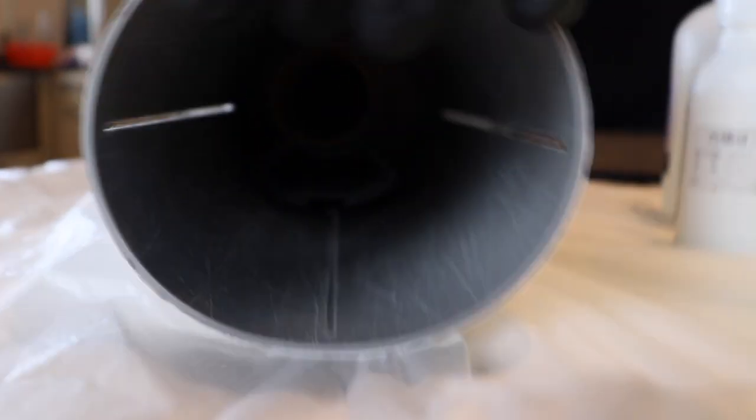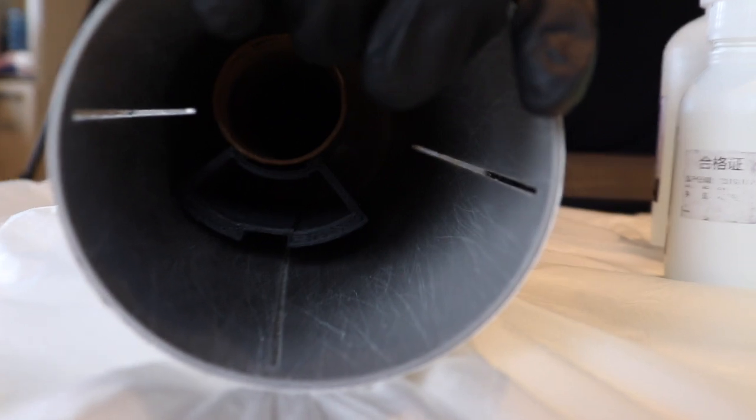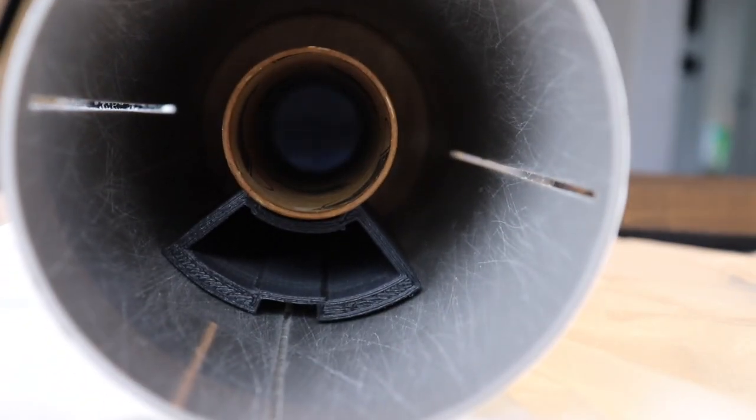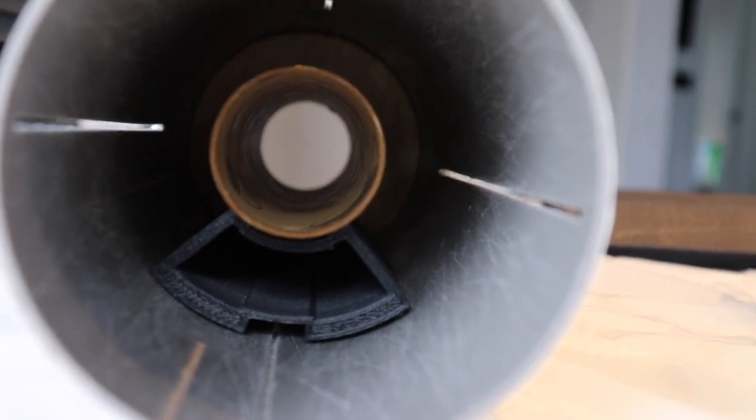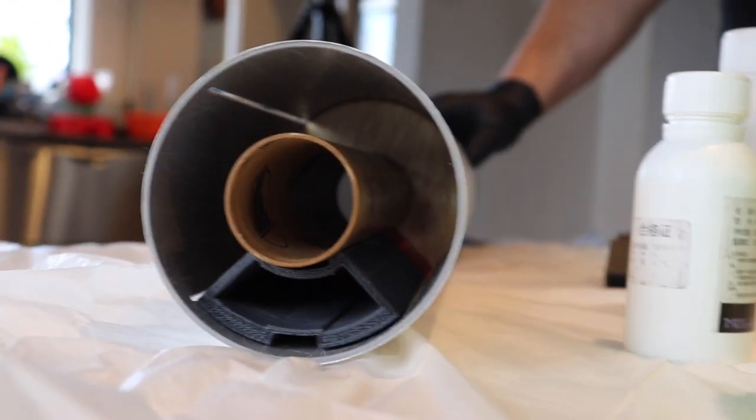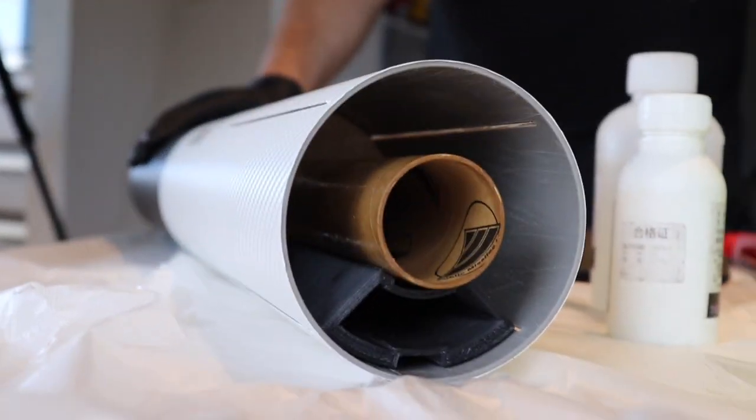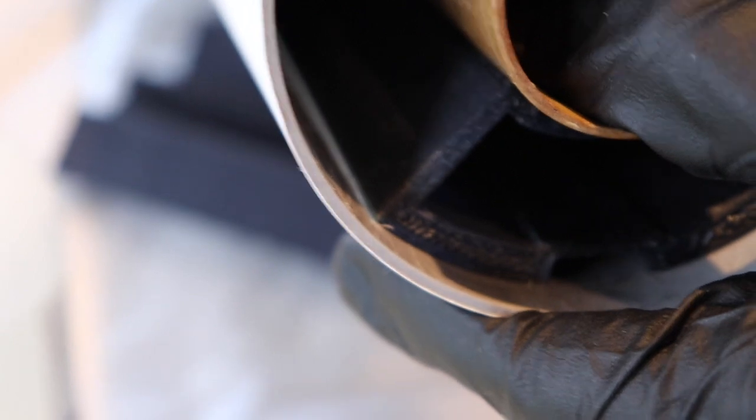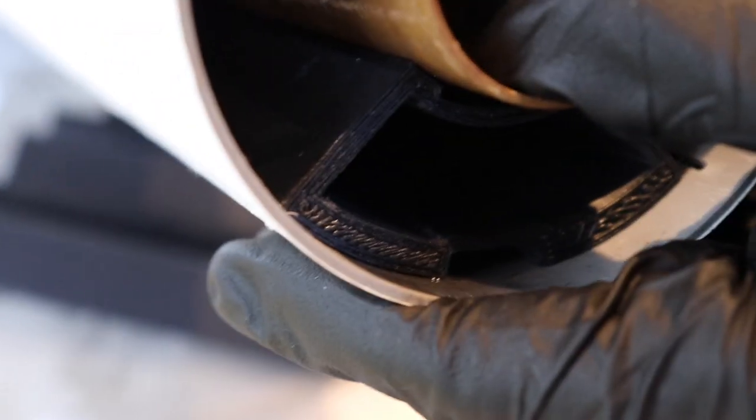Without using epoxy at this stage, introduce the motor tube assembly into the fuselage. The rationale for this is to line it up with the fin slots just like that. Now it doesn't matter if you have everything millimeter perfect at this stage. What we're doing is leaving a gap for the fins. There are such high tolerances with the quick build parts that everything will fit together quite neatly.